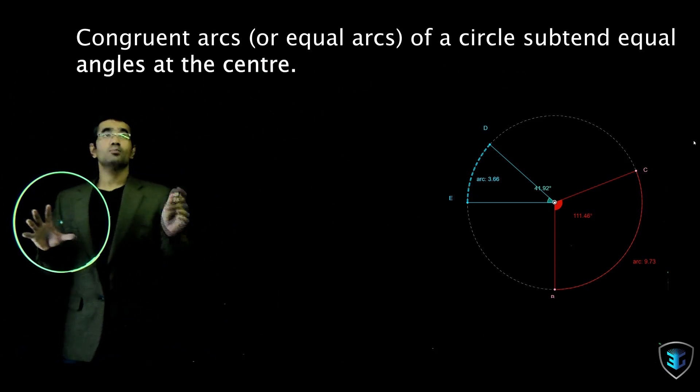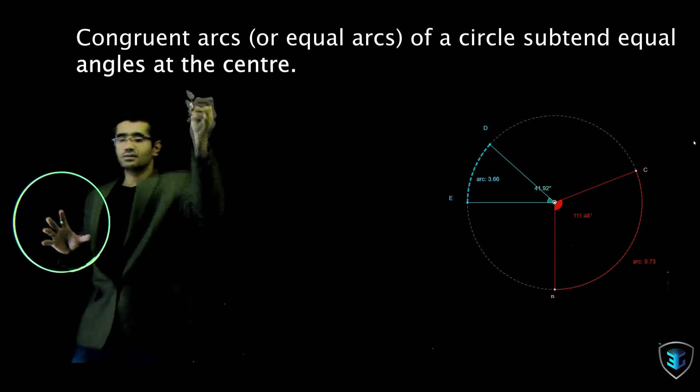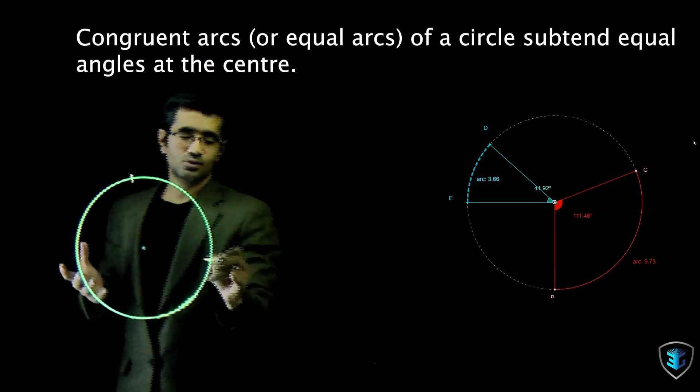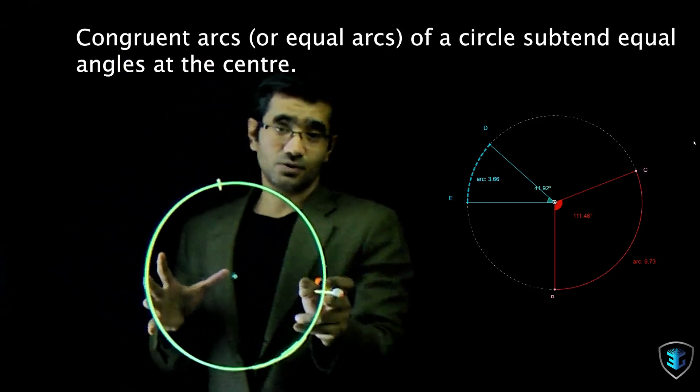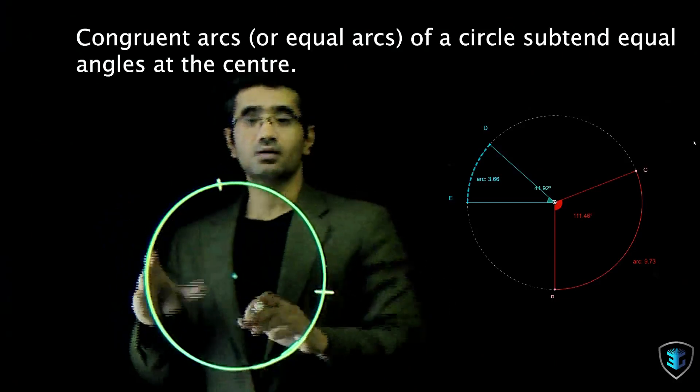Now what exactly is he talking about, what are congruent arcs? So if I say that the circle is cut at these two points, we know that this piece of the circle is called an arc and it's called a minor arc here, that's called a major arc.